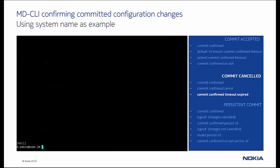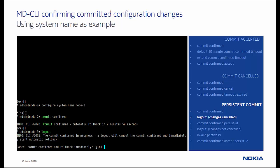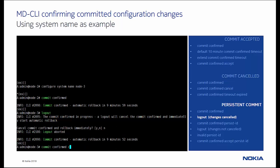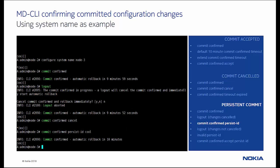In the final example we change again the system name and use the commit confirmed command to activate the changes. Notice that a session logout will cancel the commit confirmed process since commit persistence was not used. Next we abort the logout, cancel the ongoing commit confirmed, and start a persistent commit confirmed command using persist id.